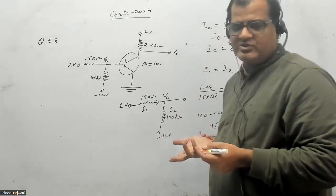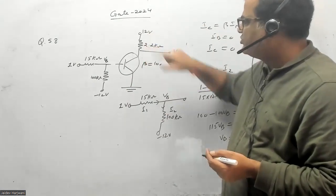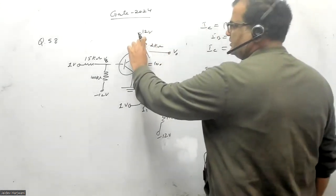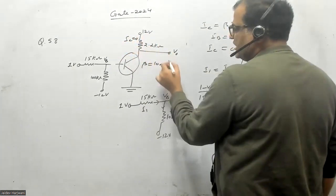So IC is a combination of beta IB plus reverse saturation current. Reverse saturation current is zero as given. So no current is flowing here. That means there will be no voltage drop here in this resistance. IC is zero, so no voltage drop.